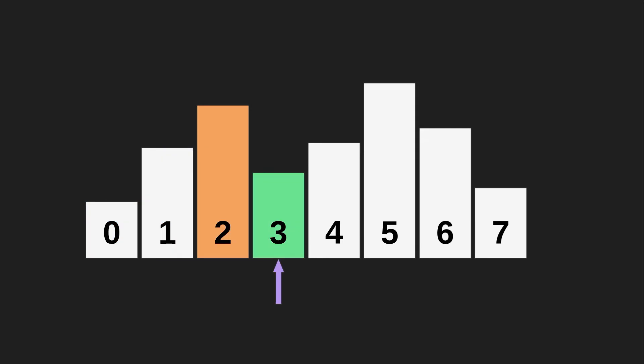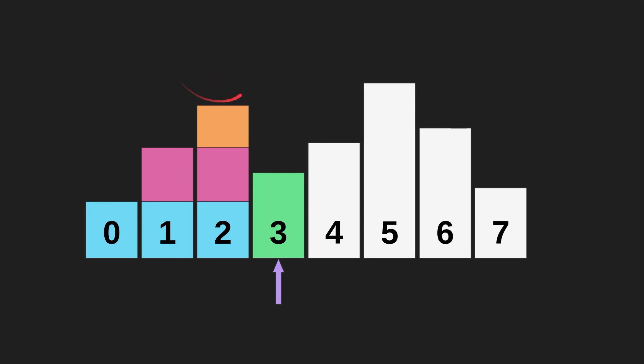Let's compare bar three and bar two. Bar three is smaller than bar two, so we can't extend bar two into bar three, and we can't extend bar one into bar three either. We can't stack rectangles on top of each other anymore. Wait — stack. Do you see it? If I do this, we've created a rainbow — I mean, a stack! We can store this information with a stack.